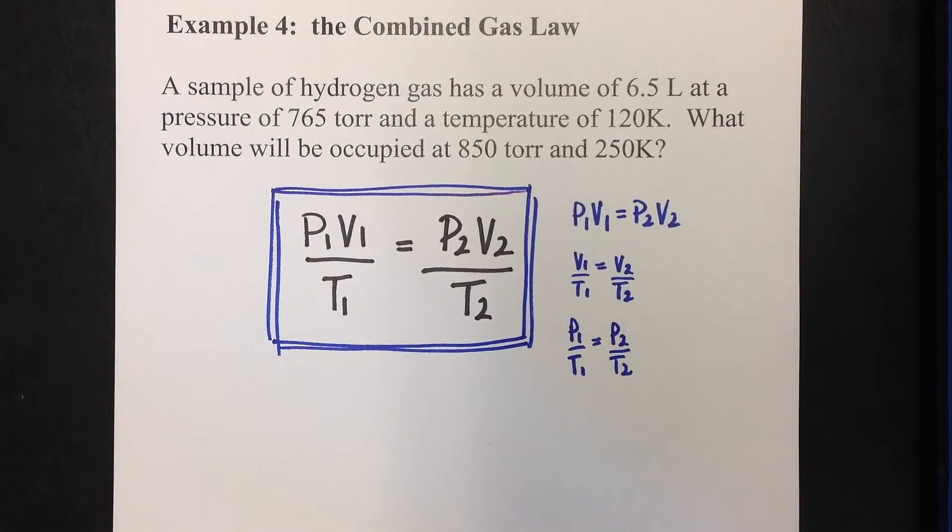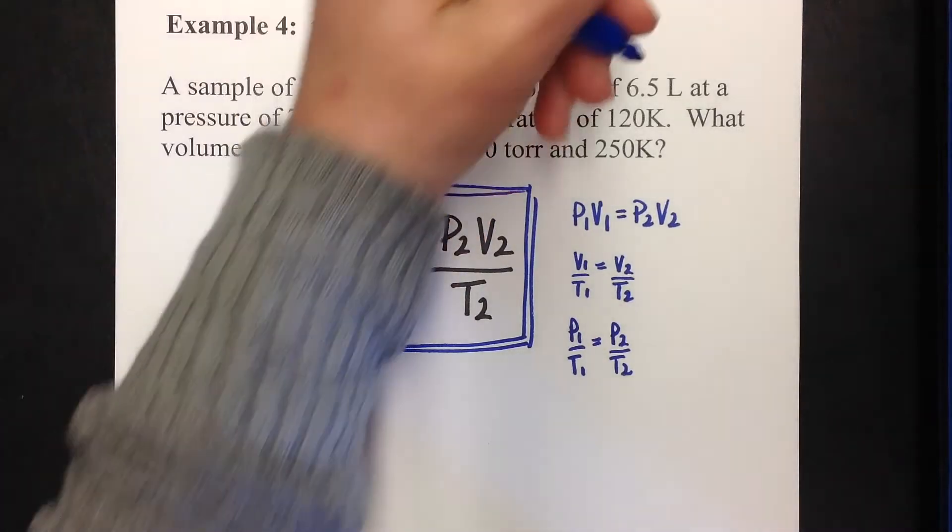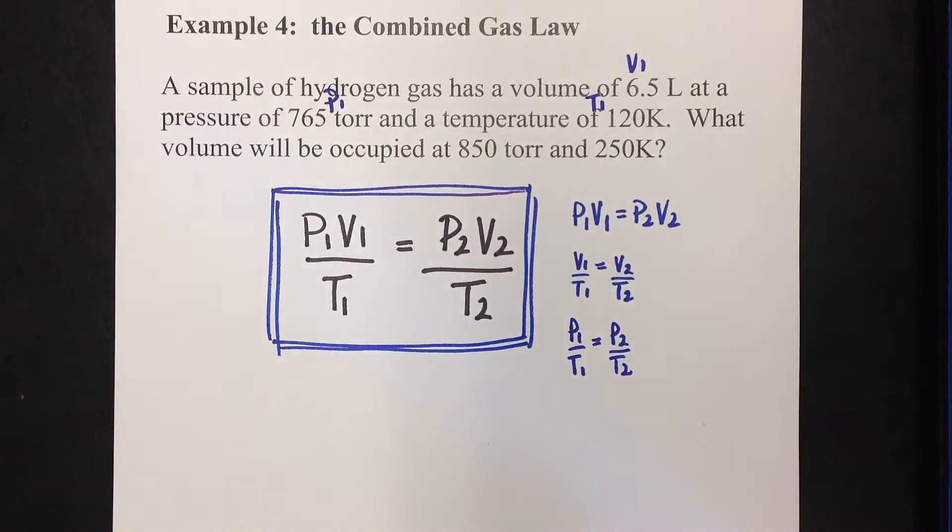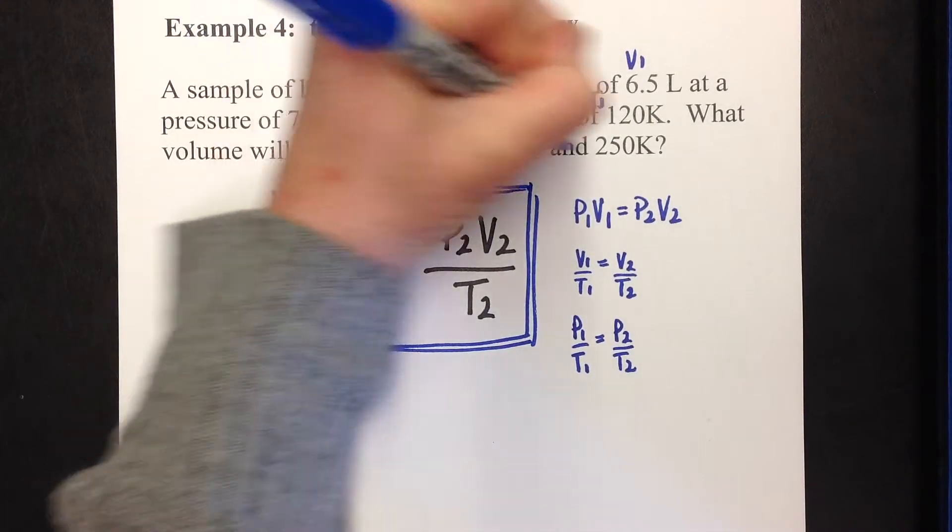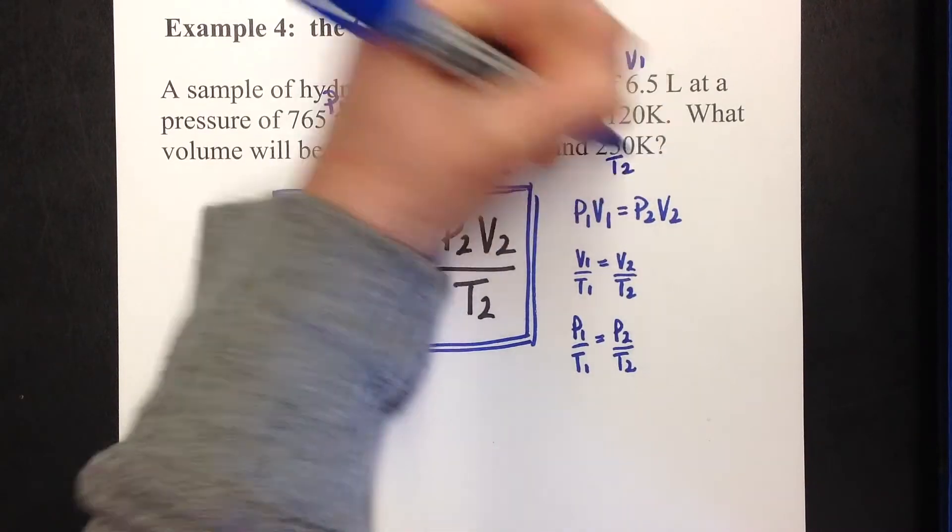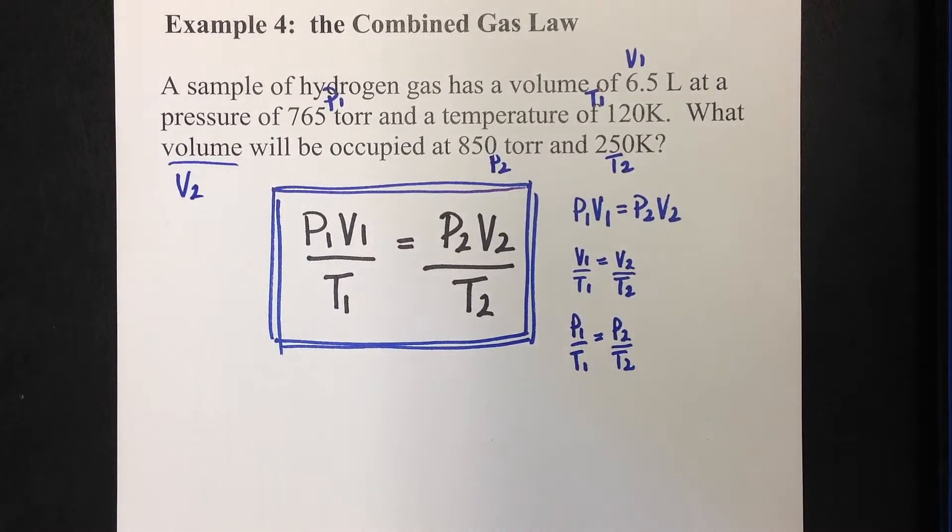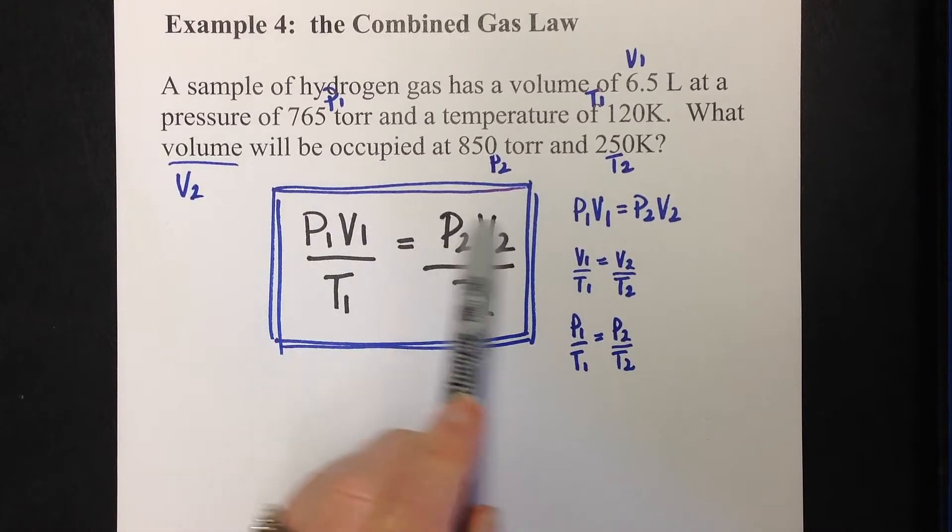Let's take a look at the problem. A sample of hydrogen gas has a volume of 6.5 liters at a pressure of 765 torr and a temperature of 120 K. I can see everything in that first sentence goes together. It's this volume at this pressure and this temperature. And yay for me, temperature's already in Kelvin, so I don't have to change anything. What will the volume be at 850 torr, the leftovers are your twos - P2 and 250 K, which is T2. It looks like I am solving for V2. I have every single part of this equation except for that V2, so that's what I'm solving for.